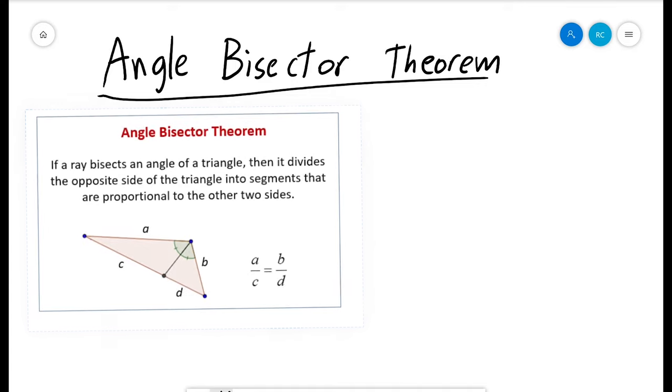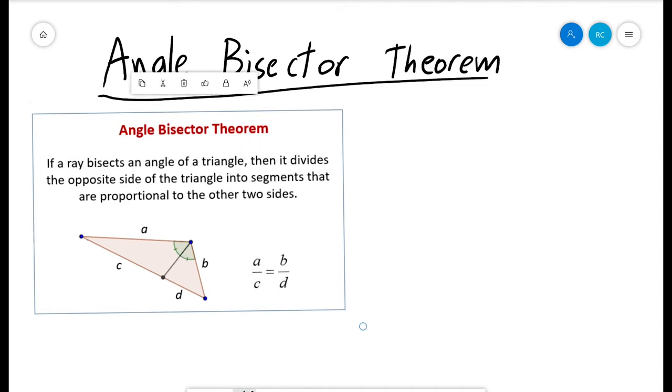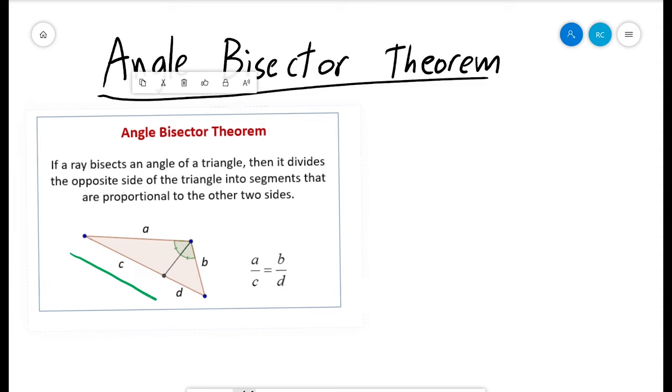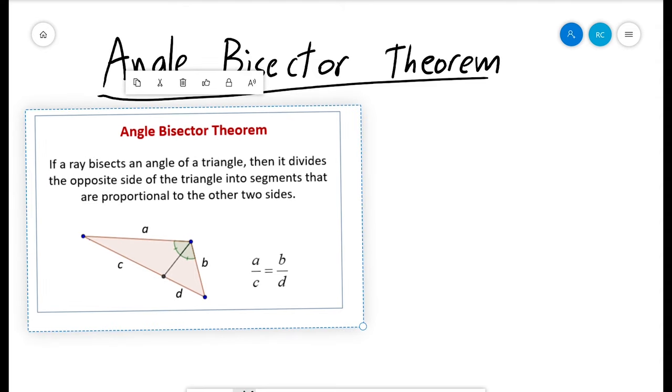So angle bisector theorem: if a ray, that would be this ray right here, if a ray bisects an angle of a triangle, then it divides the opposite side of the triangle, that's this side here, into segments that are proportional to the two other sides.